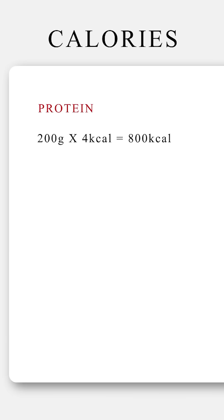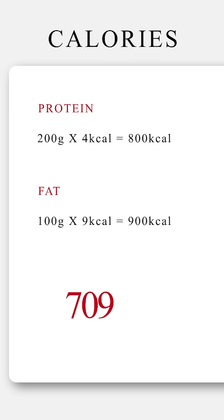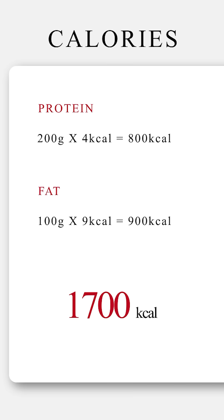We also know that there's nine calories per gram of fat. Our 200 pound athlete who's consuming 100 grams of fat is consuming 900 calories from fat. We add up those calories from fat and protein, and that gives us 1700 calories per day coming from protein and fat sources.